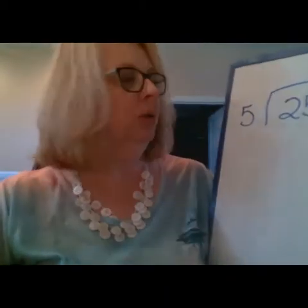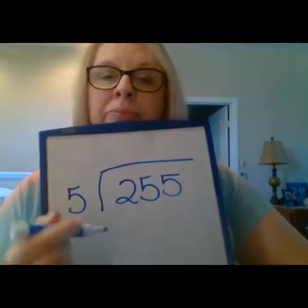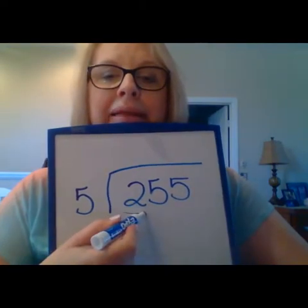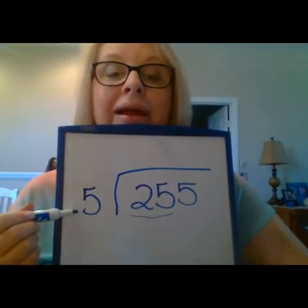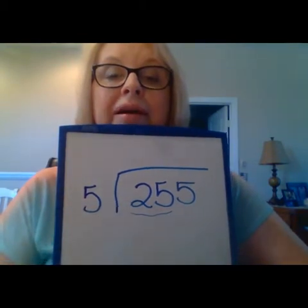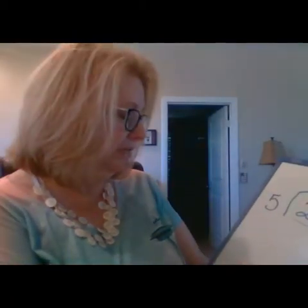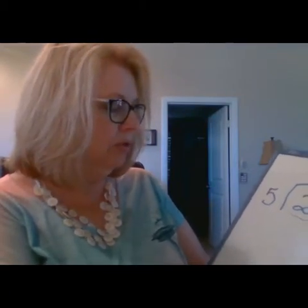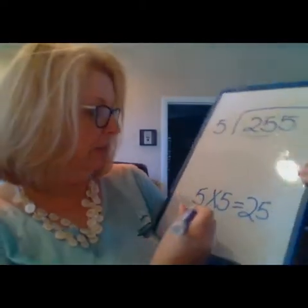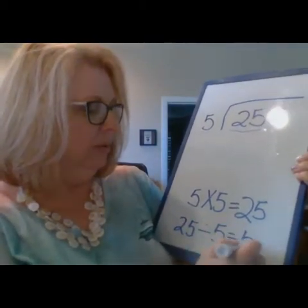So then what do we do? We have to look at the next two numbers, or the first two numbers, which are the two and the five, which makes 25. So then I ask myself, how many times does five go into 25? And I use my multiplication. Remember when we talked about how multiplication and division are related? I know that five times five equals 25.